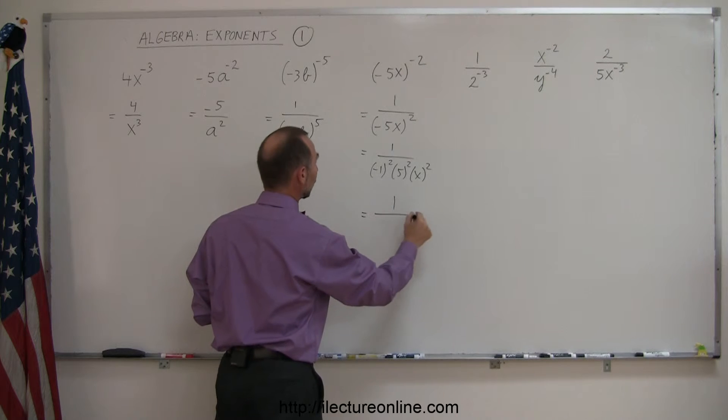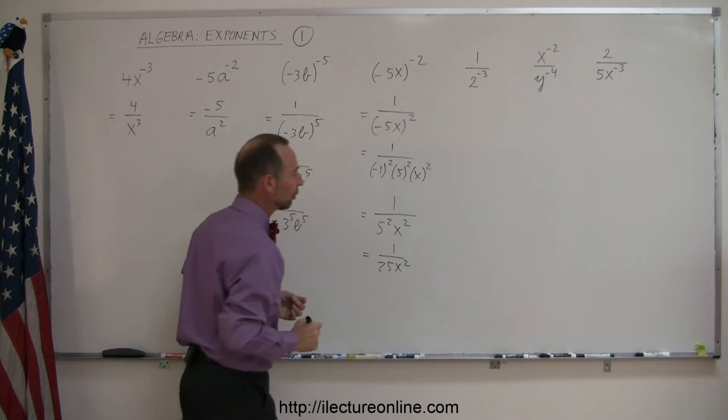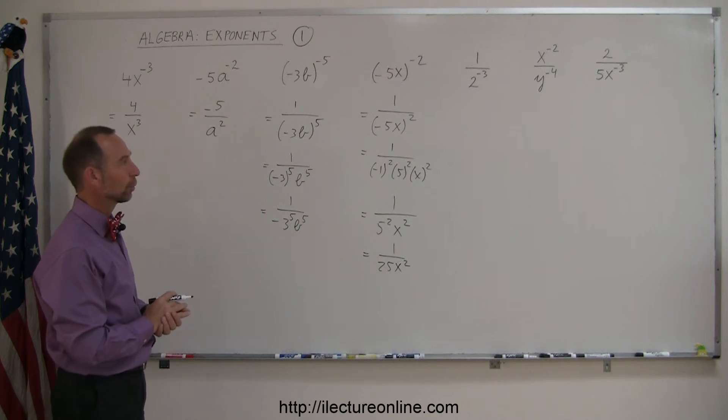So this can now be written as 1 over 5 squared times x squared, and of course, we could write it as 1 over 25x squared if you want to do that, but at least that's how you apply the rules.